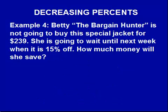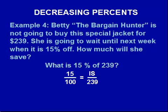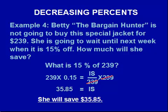We'll change this example slightly to see what we're looking for this time. Betty is not going to buy the jacket for $239 and will wait until it is 15% off. How much money will she save? We just want the decrease in price: what is 15% of $239? Using equivalent fractions, substituting in our values, and solving for the unknown, our answer is $35.85 — that is what she will save.